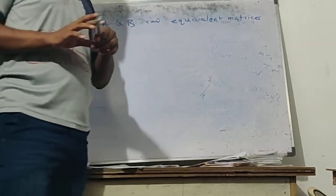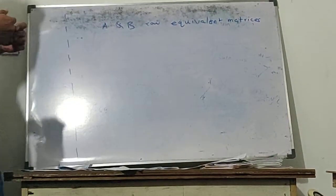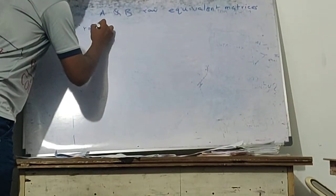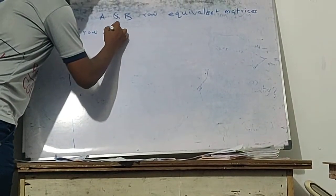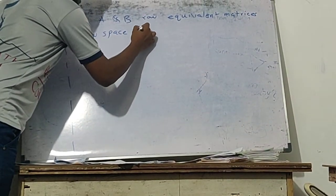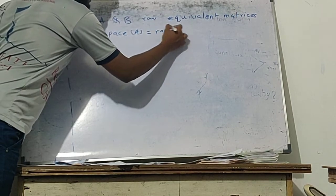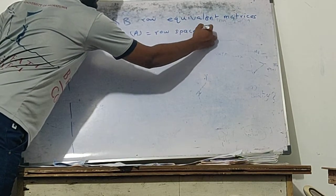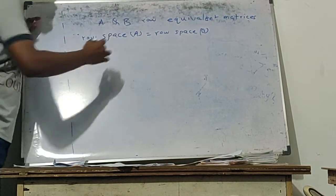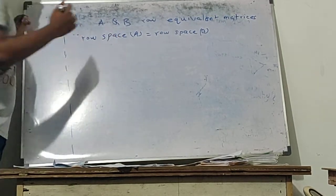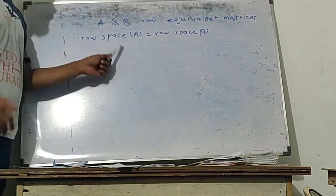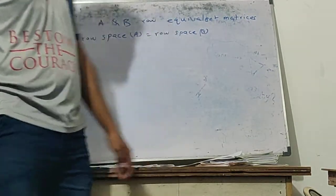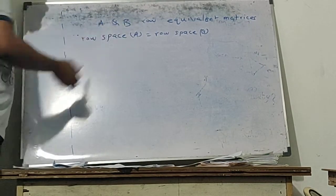Row equivalent matrices means the row spaces of A and B are equal. Row space of A equals row space of B. We can write it as row A and row B — it is the same. So if row space of A equals row space of B, then they are called row equivalent matrices.